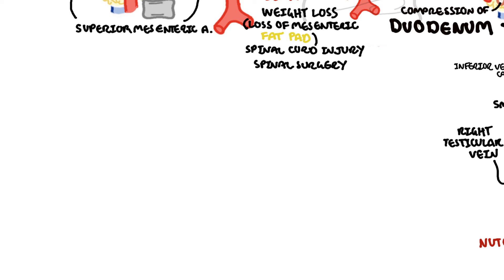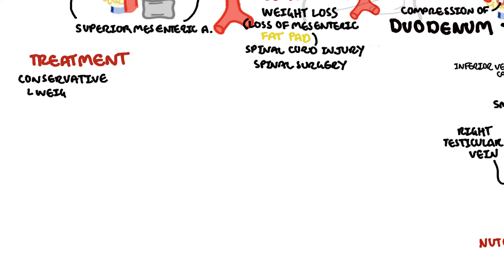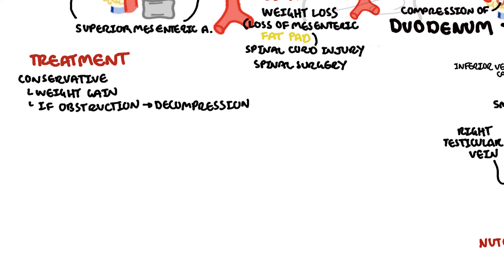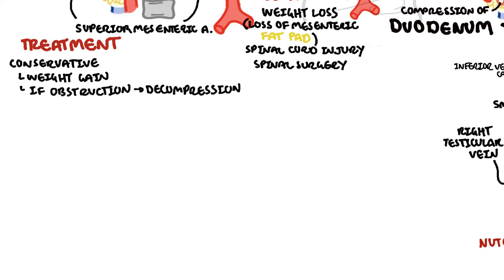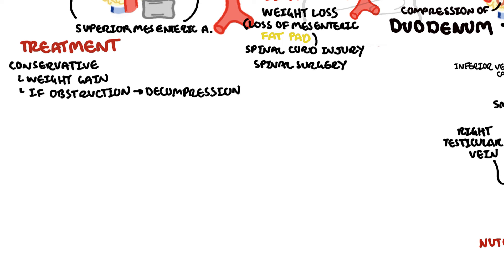Treatment can be divided into conservative or surgical. Conservatively, because weight loss is a major risk factor, weight gain is recommended. If bowel obstruction occurs, gastrointestinal decompression with a nasogastric tube is important, as well as correction of electrolyte abnormalities.